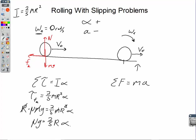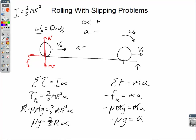Now for F = MA: friction is acting to the left and acceleration is negative, so negative force of kinetic friction equals MA. Friction is mu times the normal force Mg, so negative mu·Mg = MA. Masses cancel, giving negative mu·G = A. Key concept: while the bowling ball is slipping, the wormhole equation relating linear velocity to omega — and linear acceleration to alpha — does not apply. A is not equal to R·alpha, and V is not equal to R·omega while slipping.